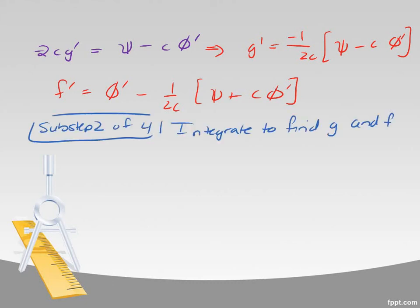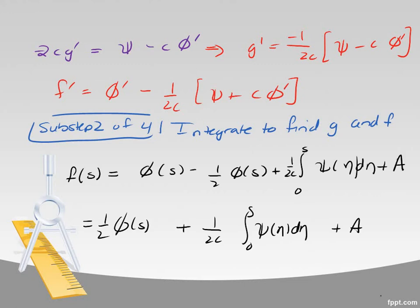Well, so in step four, substep two, I would just integrate to find the form of g and f. So if I integrate f, what do I get? Well, the integral of this is just, I'm going to put a dummy variable s in there. Integral of φ is, φ prime is φ. Then the integral of this piece is right here. The c's cancel out. And then I have this integral and I'm integrating from zero to s with some dummy variable. And then I have a constant of integration A out there. So just integrate term by term.